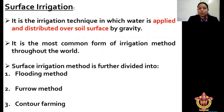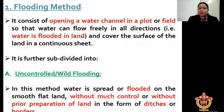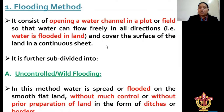Now we will talk about the flooding method. In the flooding method, it consists of opening a water channel in a plot or field so that water can flow freely in all directions — that is, water is flooded onto the land and covers the surface of the land in a continuous sheet. In the flooding method, we divide the entire area into a number of parts. First one is uncontrolled wild flooding.